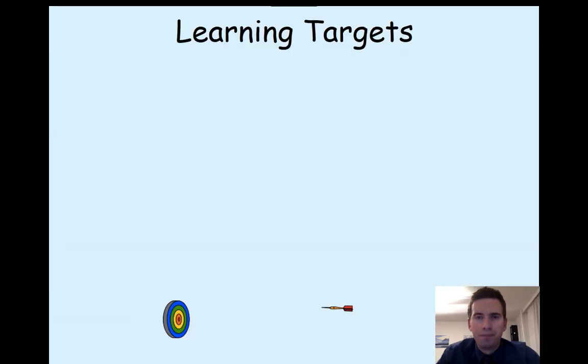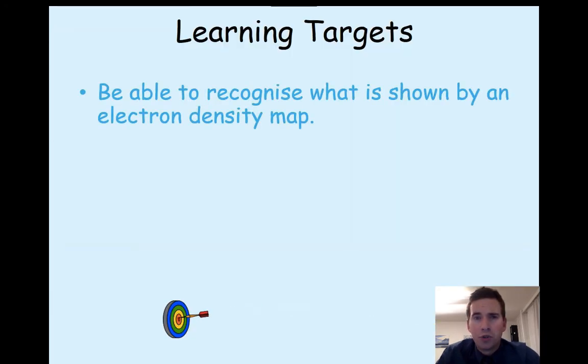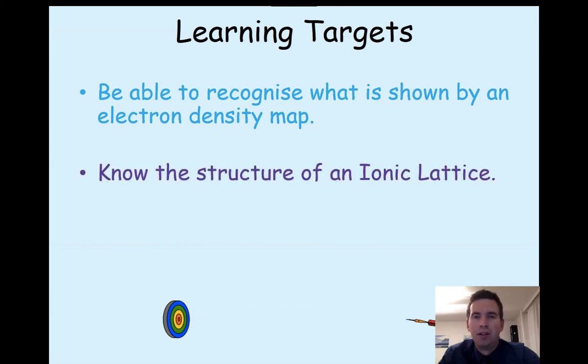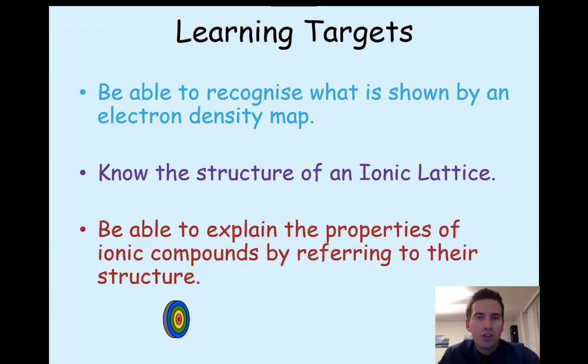So hopefully, you should now be able to recognize what is shown by an electron density map. This is new. So if you don't fully understand it just yet, don't worry. We will be covering it again when we get to covalent bonding. We should have had a recap of what the structure of an ionic lattice looks like. And hopefully, you should be able to link that structure to the physical properties of ionic solids. So I'll make sure you complete your notes and I'll see you in class.